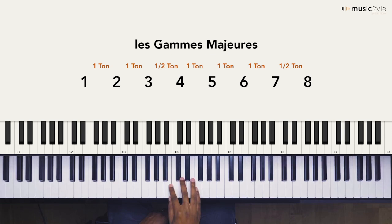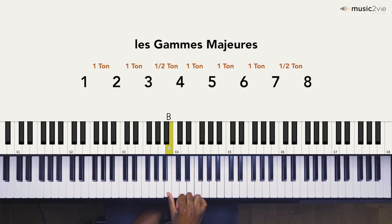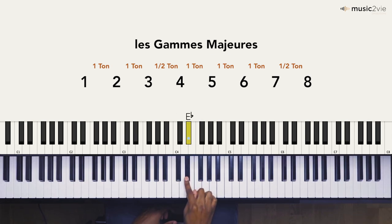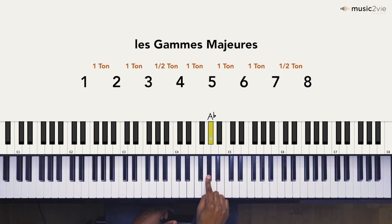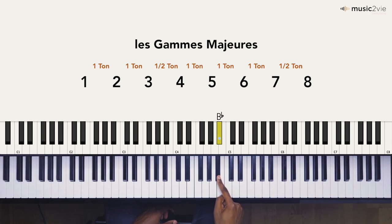Et la dernière, la gamme de Si : premier degré Si, deuxième degré Do dièse, troisième degré Ré dièse ou Mi bémol, quatrième degré Mi, cinquième degré Fa dièse, sixième degré Sol dièse, septième degré Si bémol ou La dièse. Et nous arrivons sur l'octave.